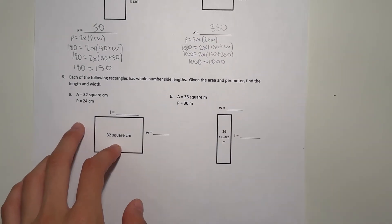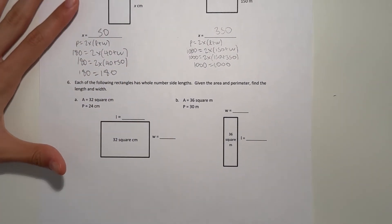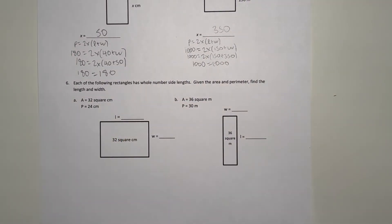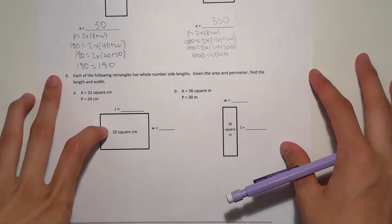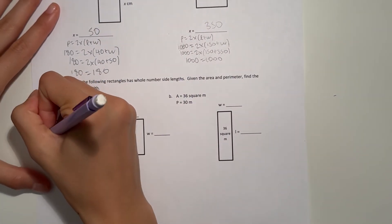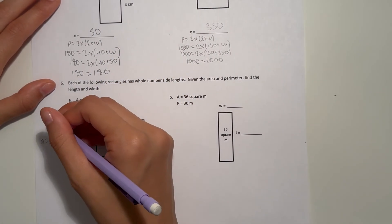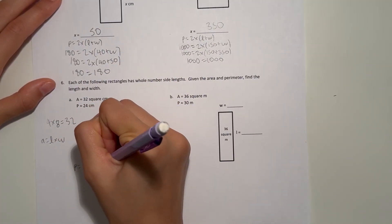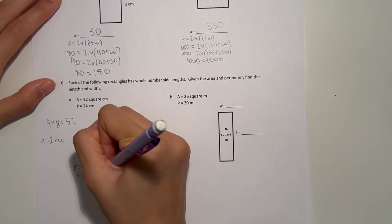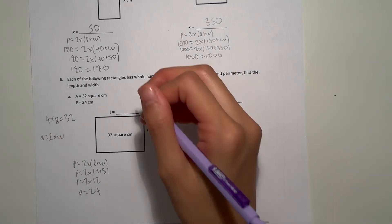Number 6: each rectangle has whole number side lengths — given the area and perimeter, find the length and width. For rectangle A, our area is 32. We know 4 times 8 is 32. Area equals length times width, so area is 32. Let's check the perimeter: perimeter equals 2 times length plus width, which is 2 times 12, and that's 24. That works out, so our side lengths are 8 and 4.